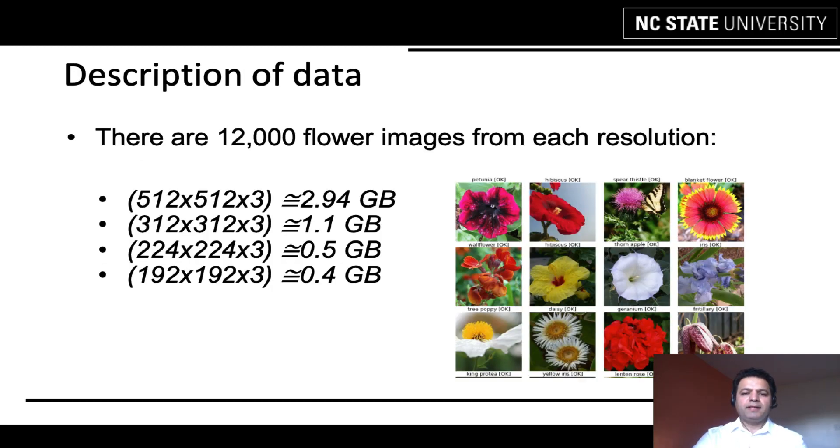The data is provided by the Kaggle website. They are given in three different resolutions. The largest resolution is 512x512 that has 12,000 flower images, which makes up 2.94 gigabytes of data. The same number of data are available in other resolutions. They are given to make the training a little faster or maybe tune up the training hyperparameters.